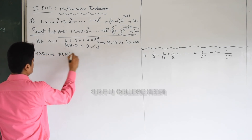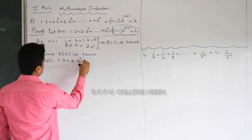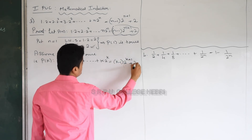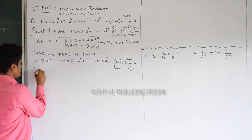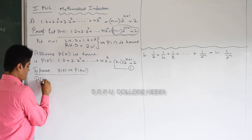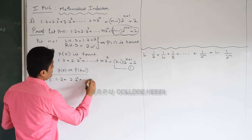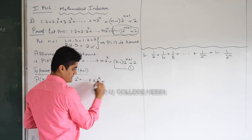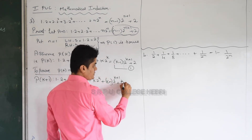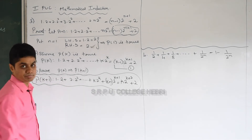Next, assume P of k is also true. P of k is: 1 into 2 plus 2 into 2² and so on up to k into 2ᵏ equals (k minus 1) into 2^(k+1) plus 2. Name this equation 1. Using this assumption, we are going to prove P of k plus 1 is also true. Before getting P of k plus 1, better to write the expected answer: 1 into 2 plus 2 into 2² up to k into 2ᵏ plus the next term (k plus 1) into 2^(k+1) equals k into 2^(k+2) plus 2.